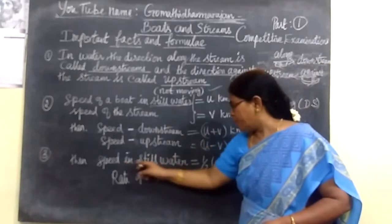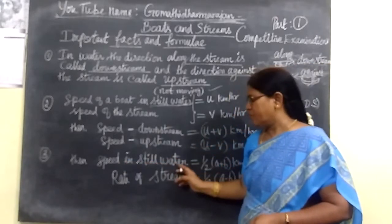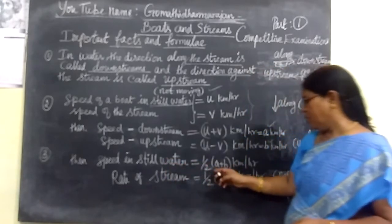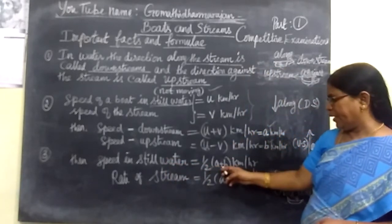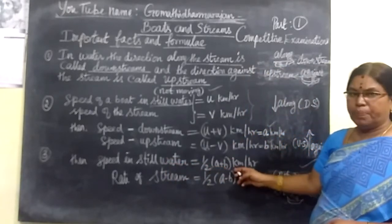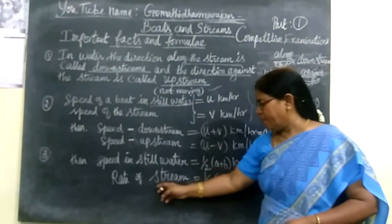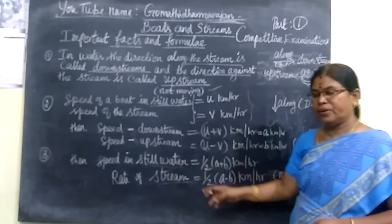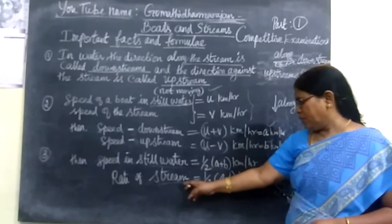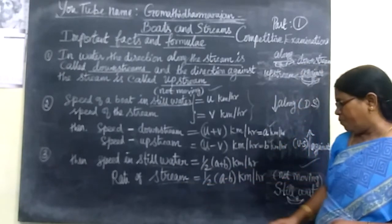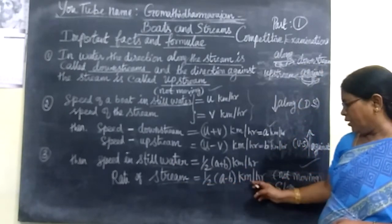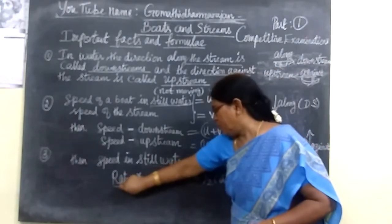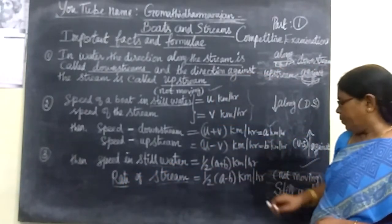If downstream speed u plus v equals a kilometers per hour, and upstream speed u minus v equals b kilometers per hour, then speed in still water equals half of (a plus b). Then rate of stream equals half of (a minus b) kilometers per hour. Rate means speed.